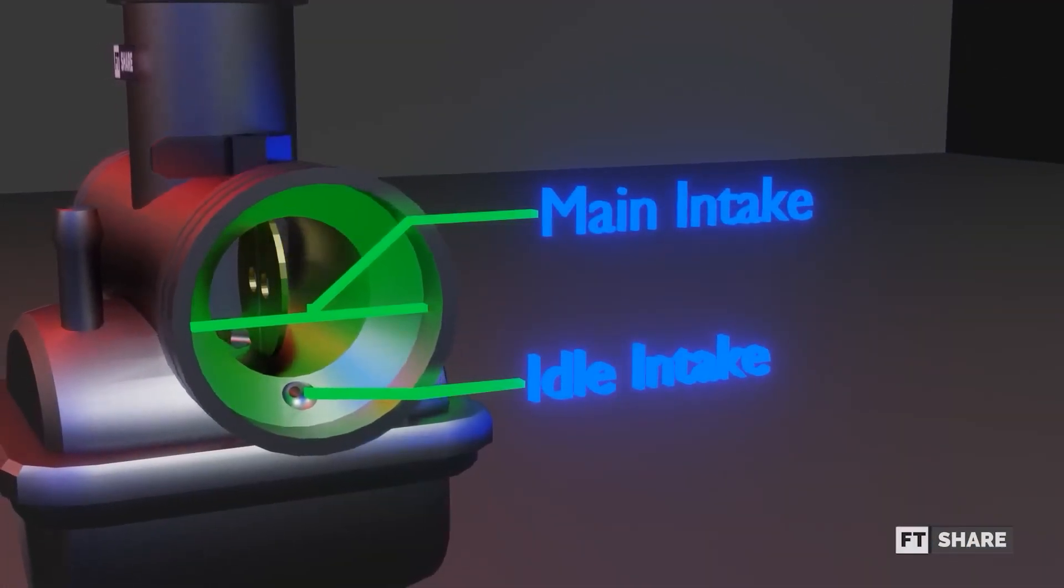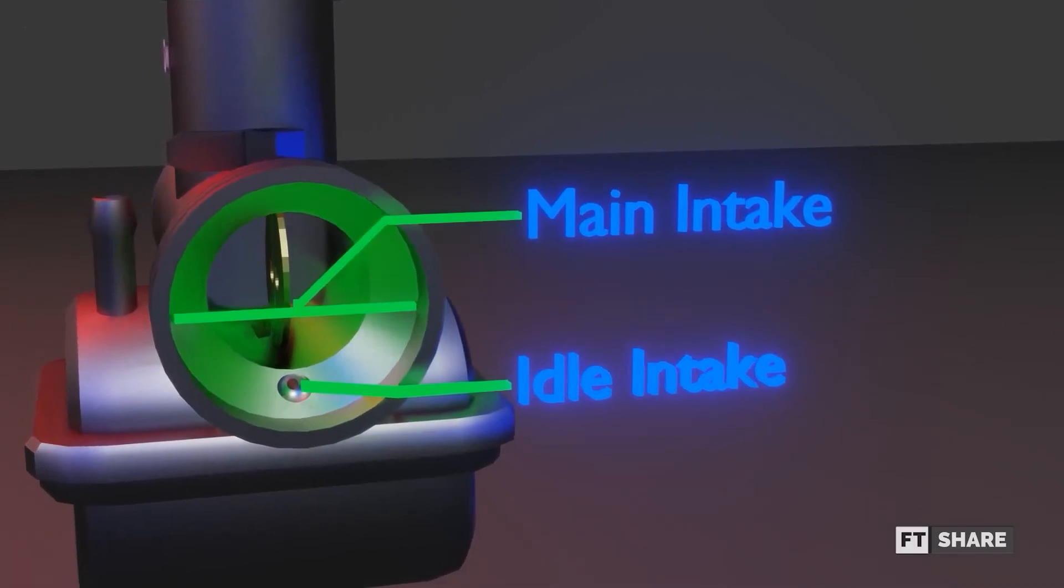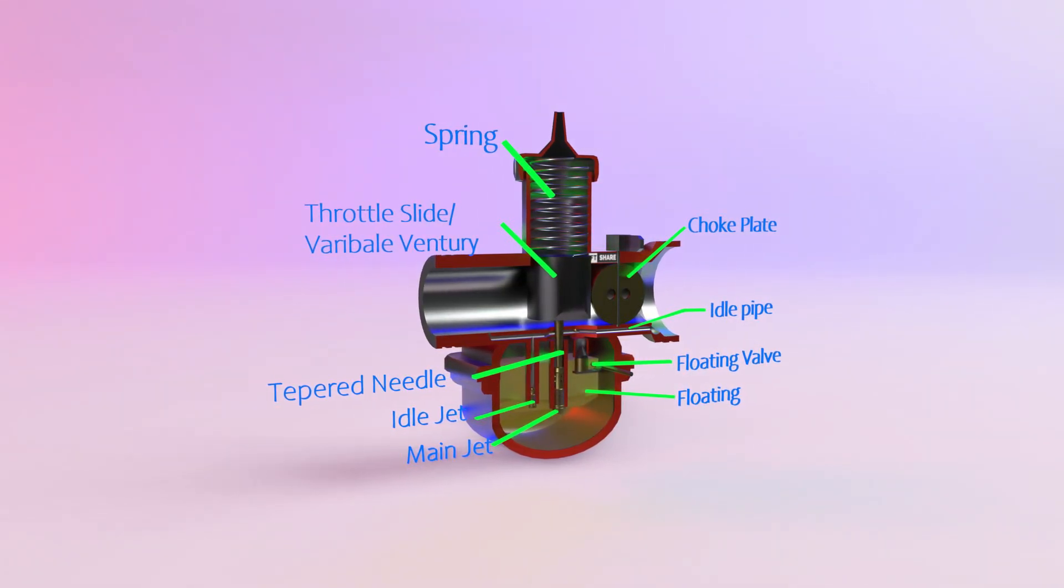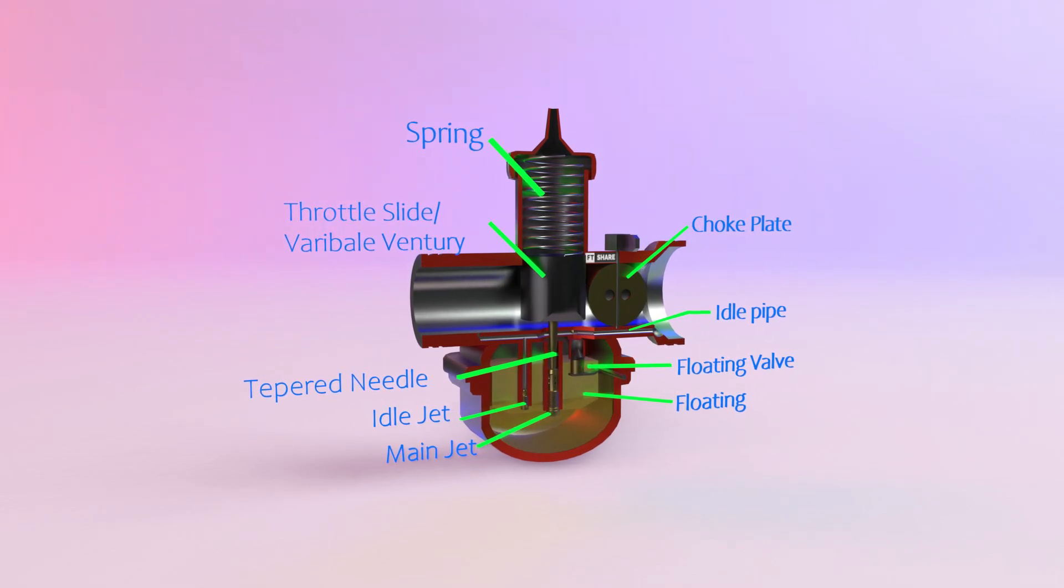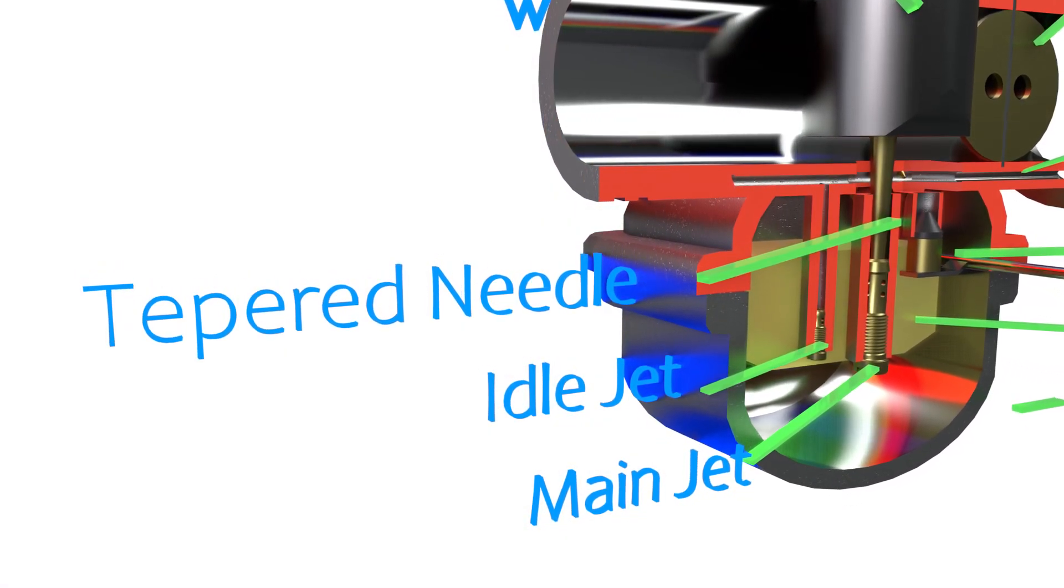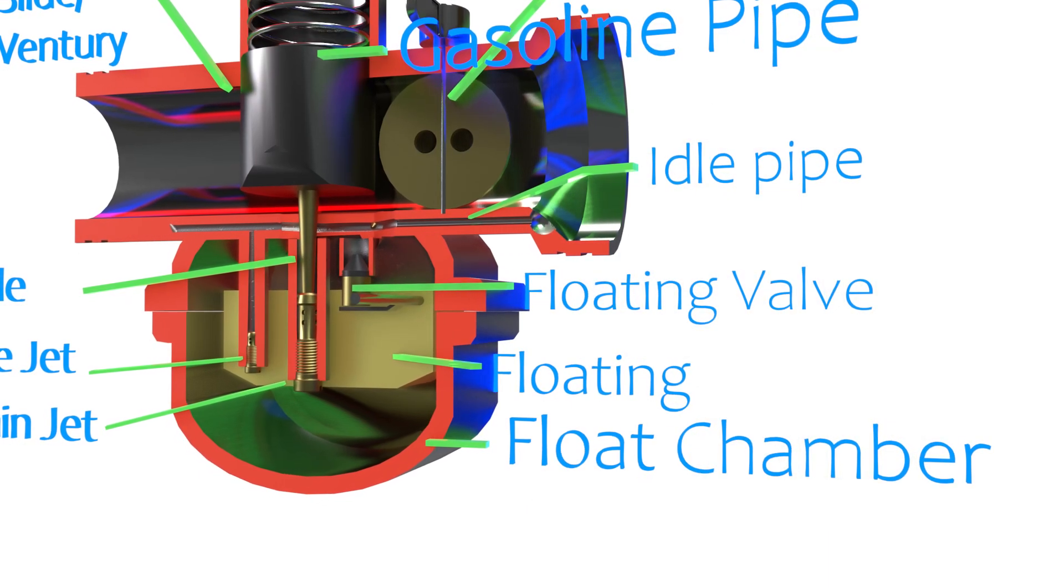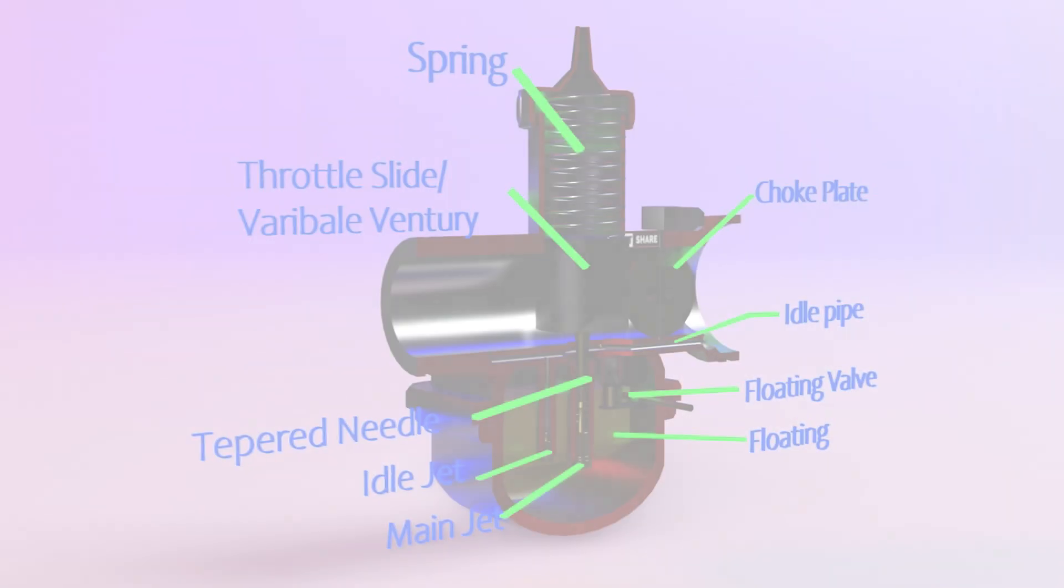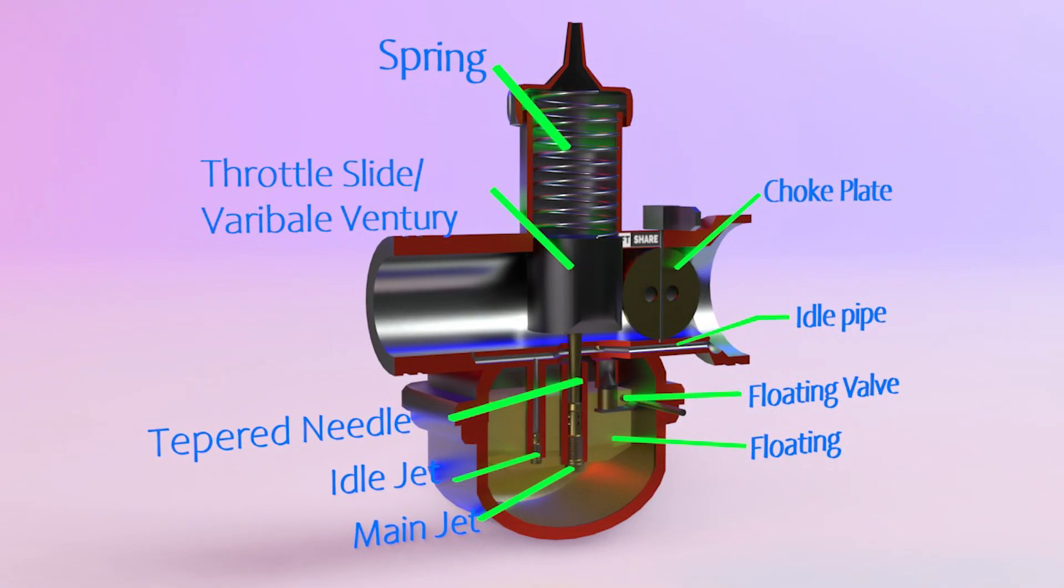From the front, the air intake and idle air intake holes are visible. Moving further into the carburetor, we can see the spring, variable venturi, tapered needle or jet needle, main jet, idle jet, float, floating valve, idle pipe or ventilation from air, from the float chamber and the choke plate. These are the parts of the carburetor.